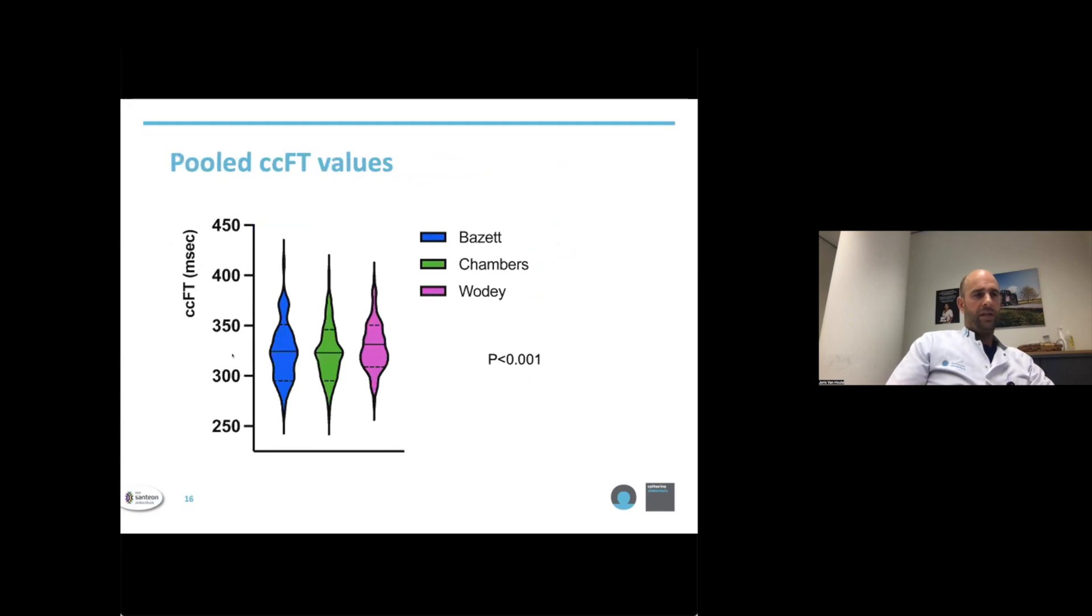In this figure, the distribution of all CCFT values from T1 to T3 is shown in a violin plot. For the three equations, the width of the kernel corresponds to the numerical density of data at different CCFT values. Paired CCFT values differed significantly depending on the equation used. You can observe this by the slight differences in the shape of the different kernels.